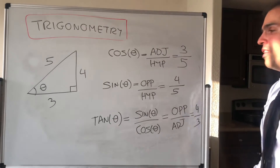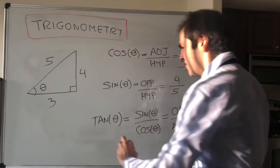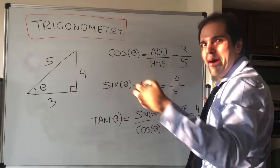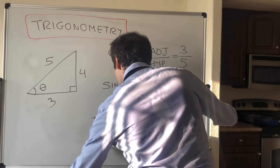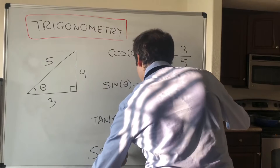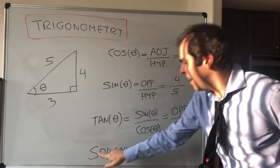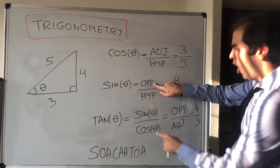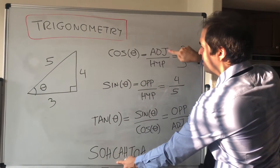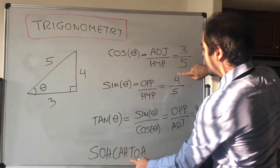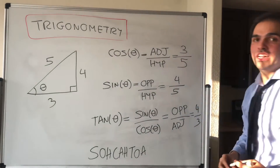There's a beautiful mnemonic for remembering all those. It's called SOH-CAH-TOA: sine is opposite over hypotenuse, cosine is adjacent over hypotenuse, and tangent is opposite over adjacent.